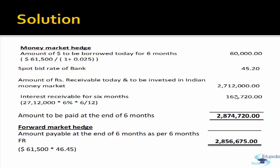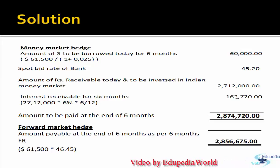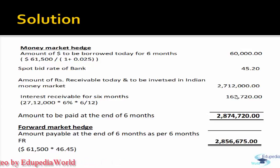After six months, the export bill of USD 61,500 repays the USD 60,000 borrowing plus interest. Today, the USD 60,000 is converted at the spot bid rate of 45.20, giving INR 27,12,000. This INR 27,12,000 is invested in the Indian market at 6% per annum (for six months), earning interest of INR 1,62,720. The net receivable after six months is INR 28,74,720.